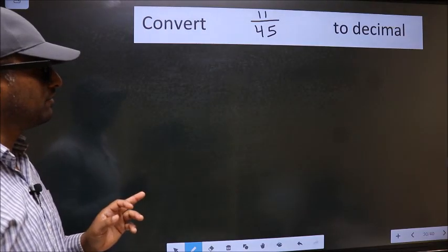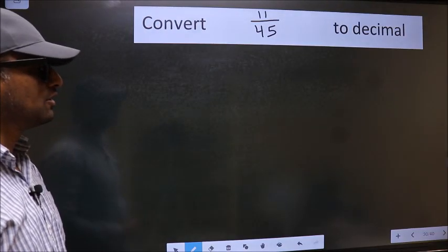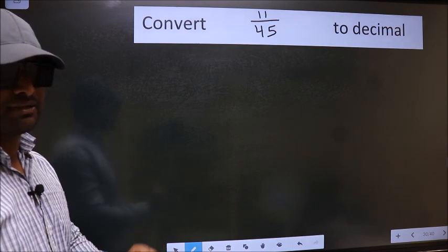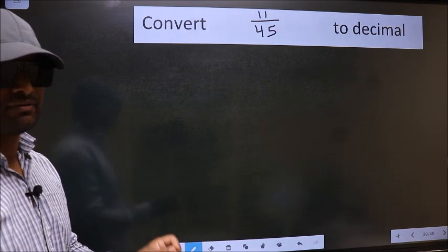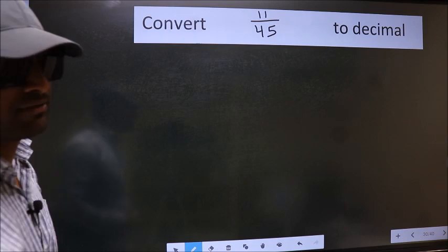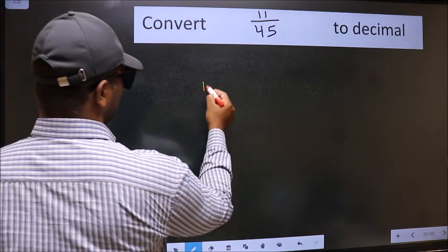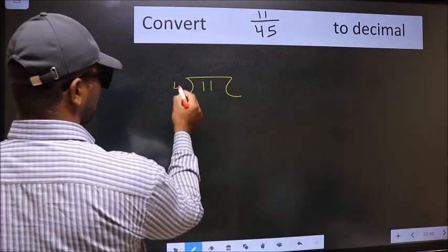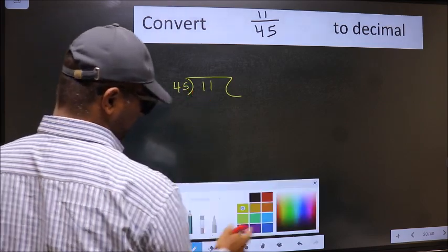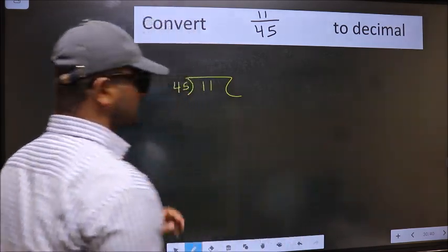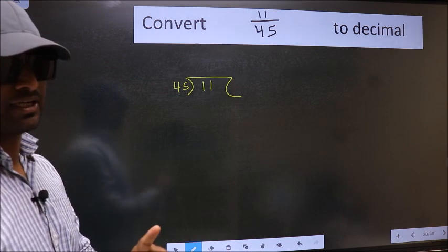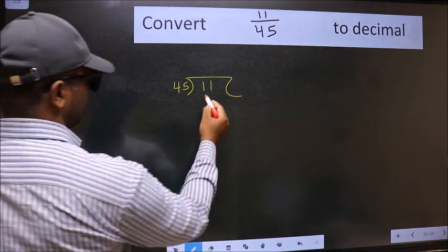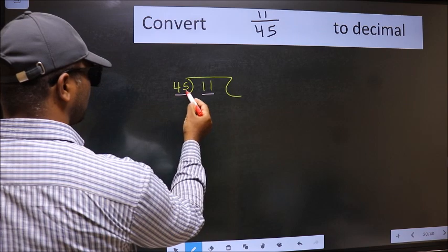Convert 11 by 45 to decimal. To convert to decimal, we should divide. And to divide, we should frame it in this way: 11 here, 45 here. This is your step 1. Next, here we have 11 and here 45.